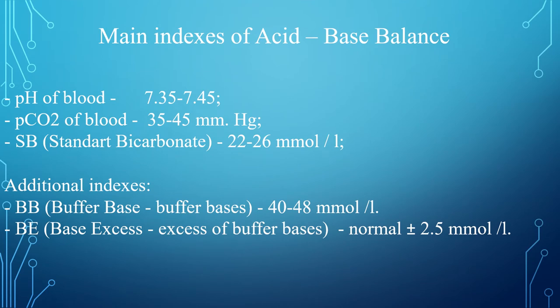Key indicators of acid-base balance: normal blood pH is 7.35–7.45; partial pressure of carbon dioxide is 35–45 mmHg; standard bicarbonate (SB) of plasma is 22–26 mmol/L. Additional indices include buffer base (BB), which is the sum of standard bicarbonate and other buffering components, and base excess (BE), which shows differences between normal and actual buffer base, with a normal value of ±2.5 mmol/L.